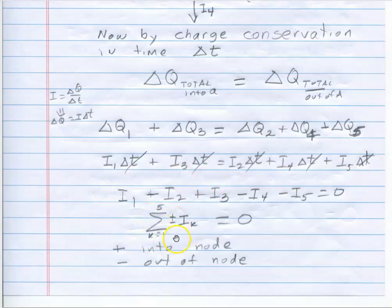The algebraic sum of the currents, IK, coming into the node, summed over all the currents, in this case 5, but it could be as many as you want. I have to assign a sign convention. And I'll assume that we use plus if it's coming into the node. That would be like I1 and I3. And minus if it's going out of the node.